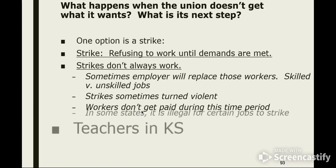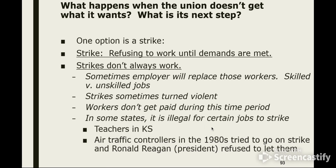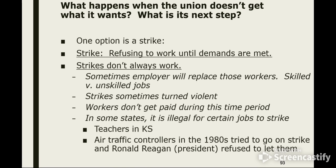Also, in some states it's illegal for certain jobs to strike. For instance, teachers in Kansas cannot go on strike — there's a law against it. The reason is that if teachers strike, students don't get an education, so the state has essentially decided education is more important than allowing teachers to strike for better working conditions. Another example from the 1980s: air traffic controllers went on strike. Those are the people in the airport tower making sure planes don't collide. They attempted to strike and President Ronald Reagan stepped in and told them if they went on strike, he would put them in prison. His thinking was that without air traffic controllers, there are no flights and the economy suffers. So he forced them to continue working while negotiations continued.